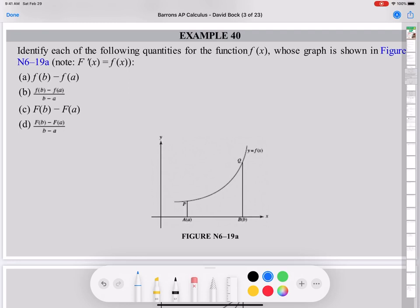I jump to example 40. Identify each of the following quantities for the function f(x) whose graph is shown in figure N6-19a. Maybe this figure. Let's talk about this figure. Part a, what does it mean f(b) minus f(a)? It is f(x), right? So this y value when x equals a is f(a). And then y value when x equals b is f(b). So f(b) minus f(a) means that difference, delta y. That change of y values between two points, delta y.